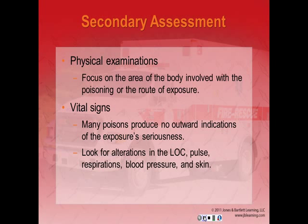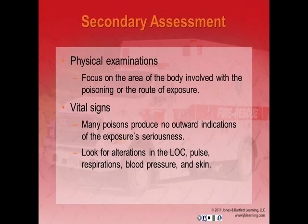Perform your secondary assessment — a more detailed, comprehensive exam used to uncover issues missed during the primary assessment. The physical exam may focus on the area of the body involved with the poisoning or the route of exposure. After addressing ABCs, a thorough physical exam provides additional information on the exposure. It is important to perform a general review of all body systems. Many poisons produce no outward indications; alterations in level of consciousness, heart rate, respiratory rate, blood pressure, and skin are the most sensitive indicators.